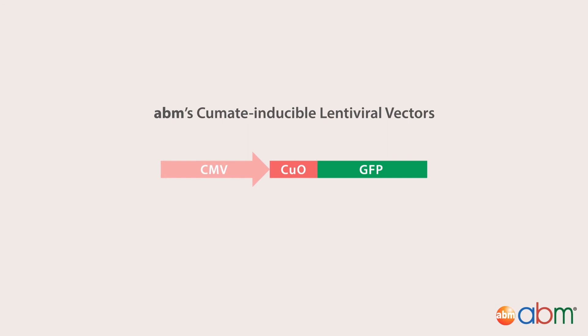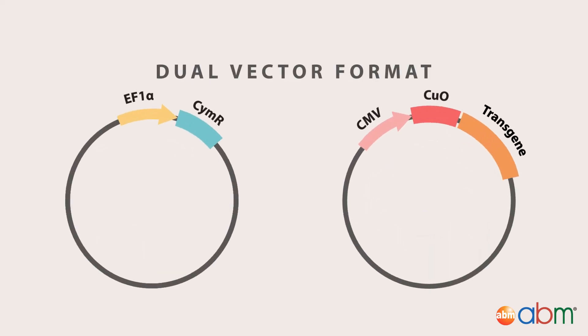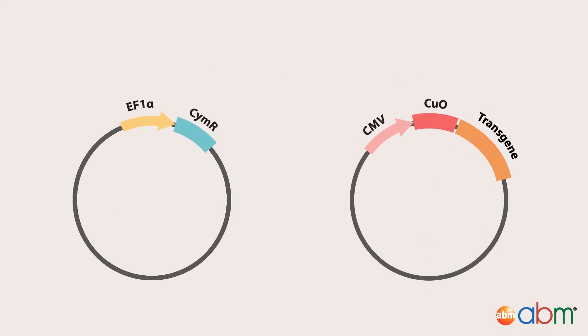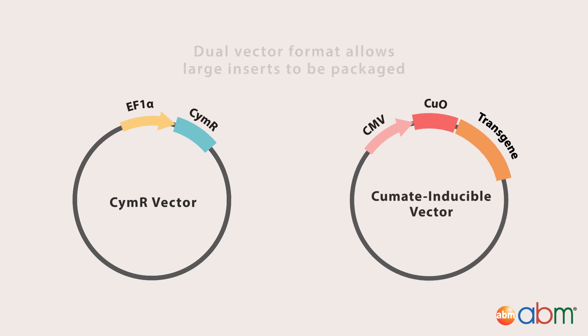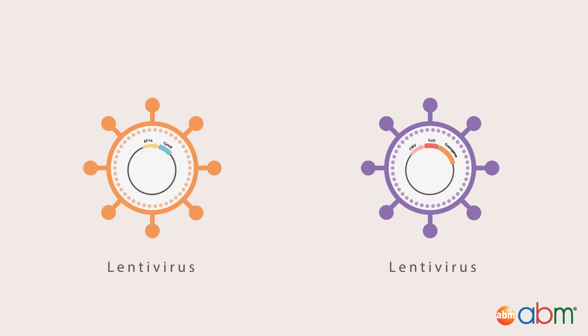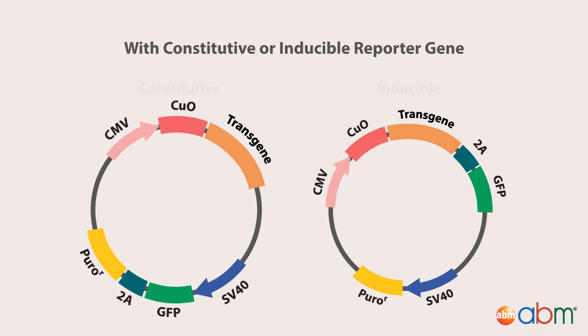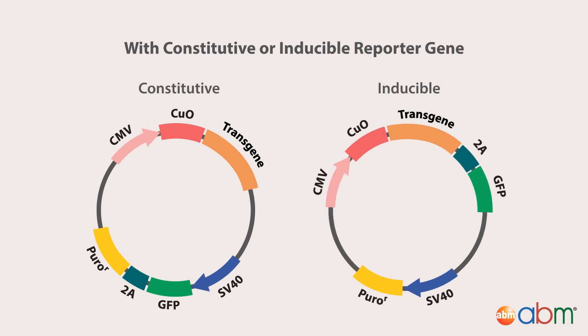ABM's cumate-inducible lentiviral vectors use a CMV promoter, as it leads to strong gene expression and is active in a broad range of mammalian cells. Our system is optimized for a dual-vector format, where the SIMR repressor is provided in one vector and the cumate-inducible gene of interest is in another. The dual-vector format allows large inserts to be packaged and ensures tight regulation of gene expression.